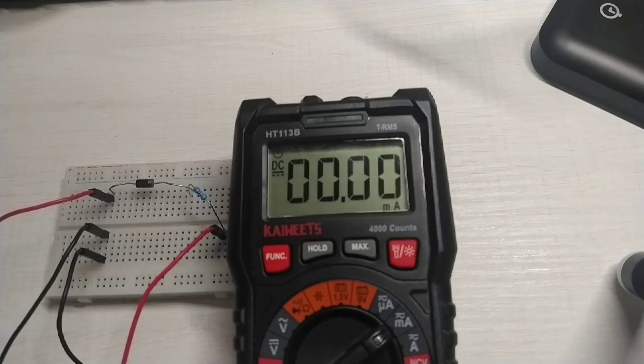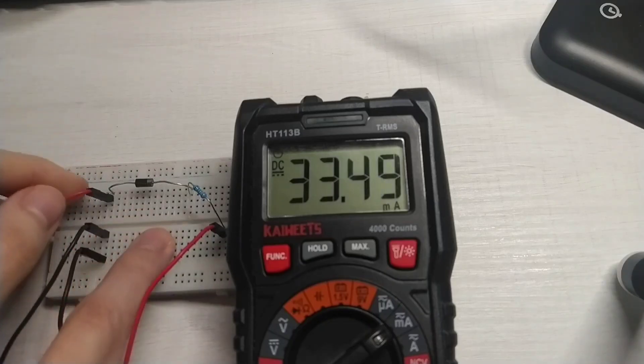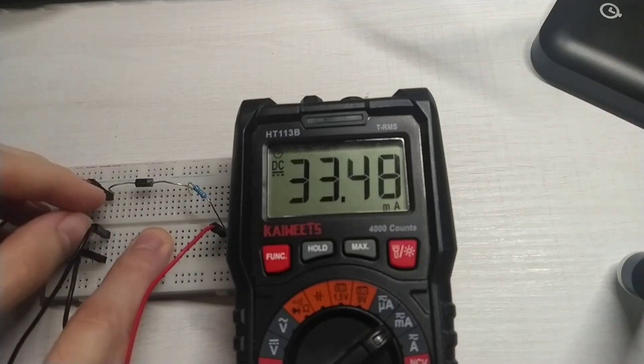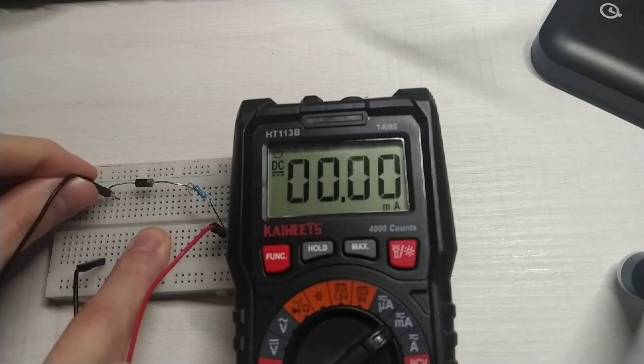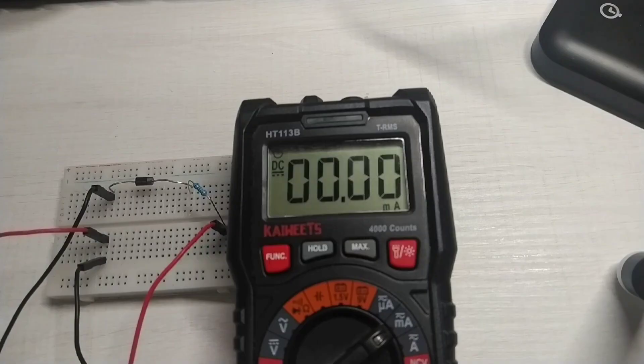Okay, as you can see the setup is really simple, just a diode on the resistor. Now I'm gonna turn on the supply. So we have 33 milliamps current flowing. Now I'm gonna swap the two cables. We must see zero milliamps flowing. So we are protected.